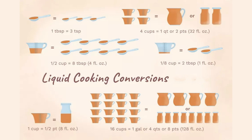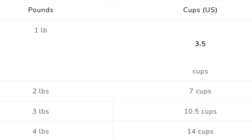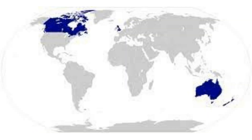A cup is a unit of volume equal to 16 tablespoons, one half pint, one fourth quart, or eight fluid ounces. A US cup is about 237 milliliters — rougher equivalents are 240 milliliters and 250 milliliters, where the latter fits nicely with a US pint of 500 milliliters. A metric cup is 250 milliliters. In Australia, Canada, New Zealand, and the UK, these countries previously used the Imperial system in which a cup would be 284 milliliters.